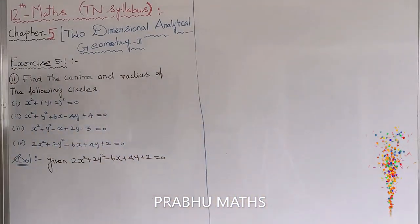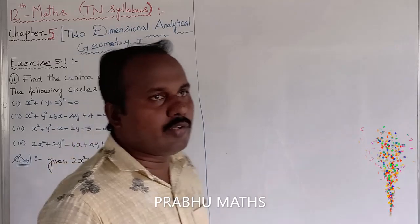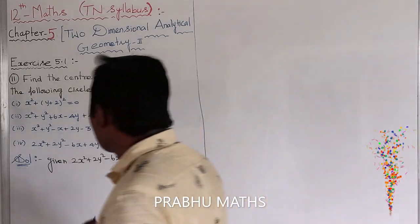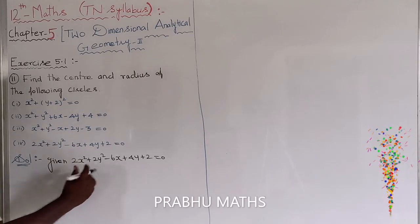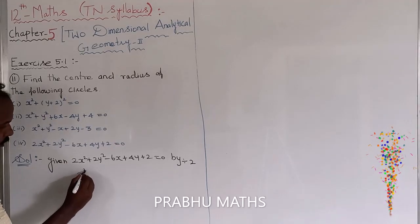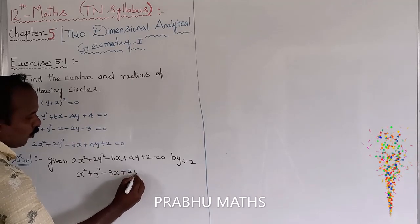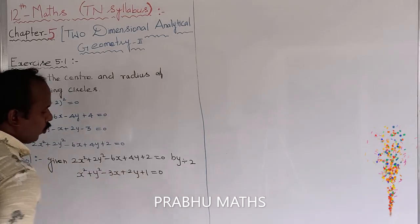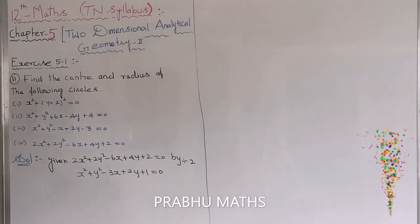First, this equation must be converted to the standard general form. Because in the general form of a circle, the coefficient of x squared equals the coefficient of y squared, and there is no separate coefficient. So we divide the entire equation by 2, giving: x squared plus y squared minus 3x plus 2y plus 1 equals 0.